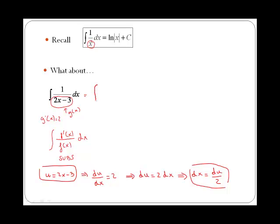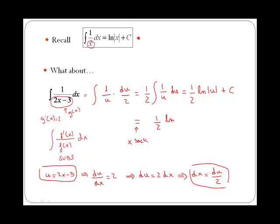Going back to the integral, we can replace 2x minus 3 by u, so we have 1 over u. And then instead of dx, we are going to write du over 2. If we take a half outside, then we are left with the integral of 1 over u du, which is precisely this one here. The integral of 1 over u is ln of u plus the constant of integration. And then if we just bring our x back, our answer would be a half ln of 2x minus 3 plus c.